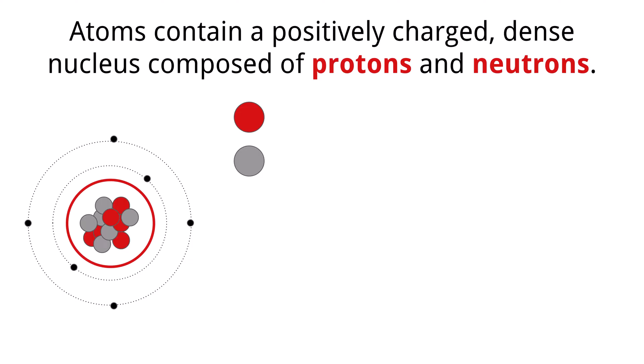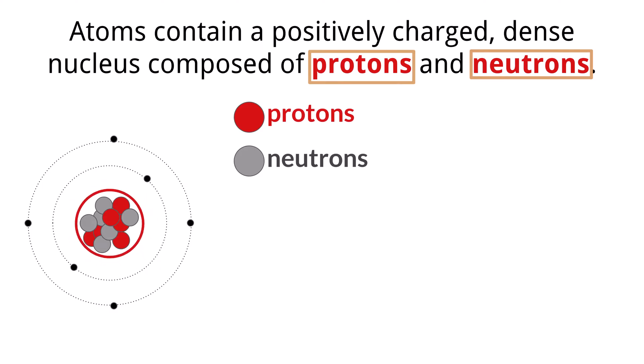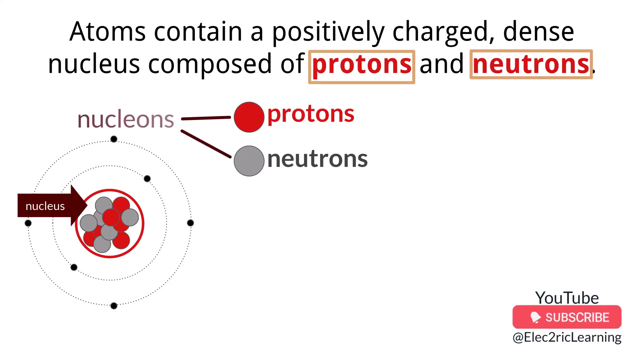The core of every atom can contain two components, which are called protons and neutrons. They sit at the center of the atom taking up a small, very condensed space in the middle, called the nucleus. We can refer to both the protons and neutrons as nucleons because they will always be found within the nucleus.